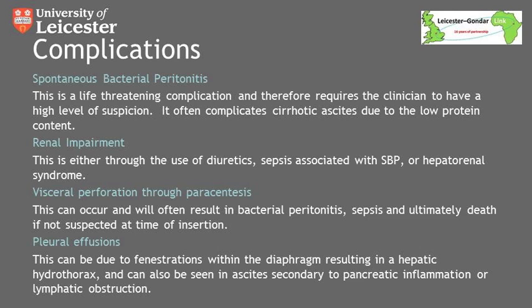The next complication to consider is renal impairment. This can occur through the use of diuretics such as spironolactone or furosemide, through sepsis such as spontaneous bacterial peritonitis, or patients can develop hepatorenal syndrome, which carries a very poor prognosis and is a sign of end-stage liver failure. This is usually treated through plasma expansion, but if this does not work, other medications such as terlipressin may be used. Also consider visceral perforation through paracentesis — this is a well-recognised complication that can result in bacterial peritonitis, sepsis, and ultimately death. To avoid this, always perform an ascitic tap first, and if fluid is obtained easily, drainage will usually be safe.